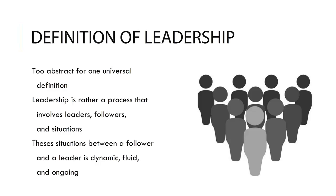The best way to look at leadership is that it's a process that involves three things: first, leaders; second, followers; and lastly, situations. The difference between a follower and a leader is that leaders influence followers. The relationship between leaders and followers is dynamic, fluid, and ongoing.